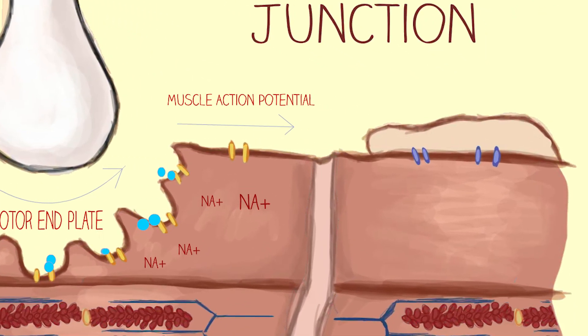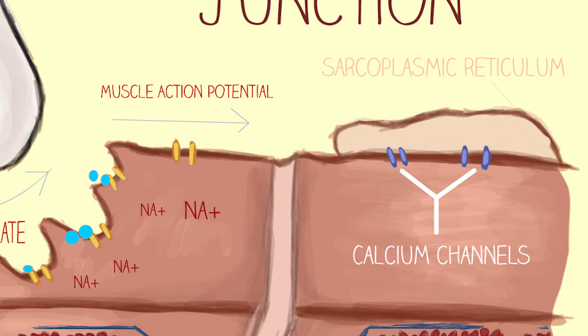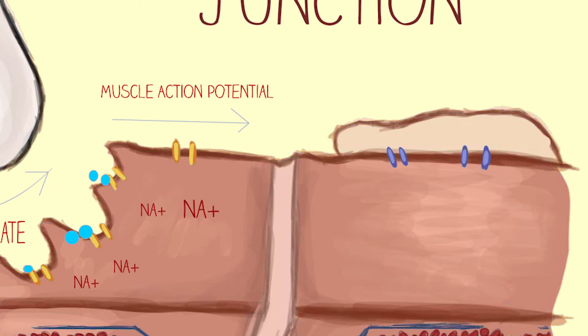Now, as the muscle action potential travels down the sarcolemma and T-tubules of the muscle fiber, L-type voltage-gated calcium channels become activated. These channels stand for long-lasting voltage-gated calcium channels. Remember, action potentials are electrical signals, so it makes sense that these action potentials can activate a channel that is voltage-gated. Once activated, these voltage-gated calcium channels will activate secondary messenger proteins, which ultimately activate calcium release channels located in the membranes of sarcoplasmic reticula throughout the muscle fiber.